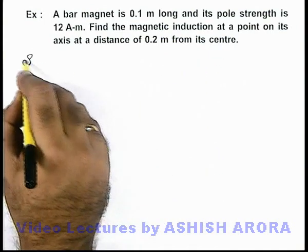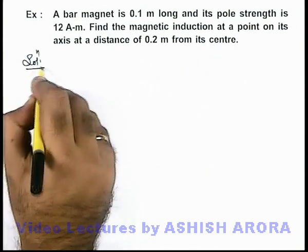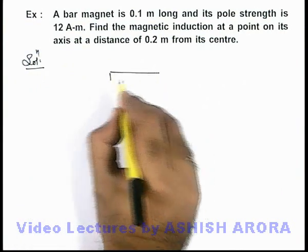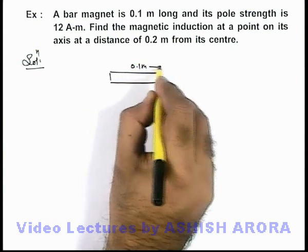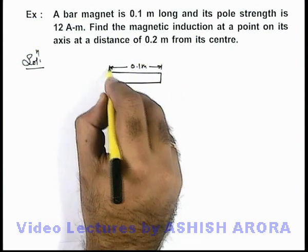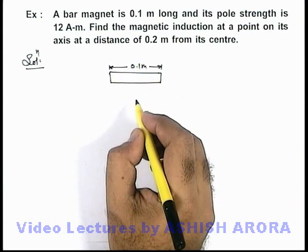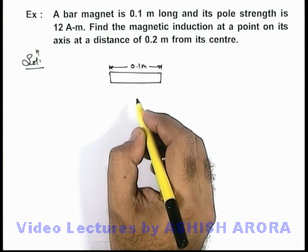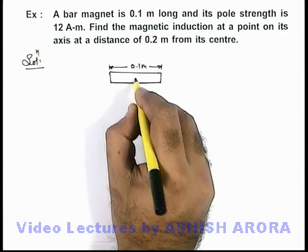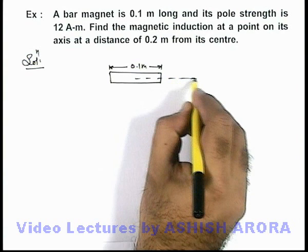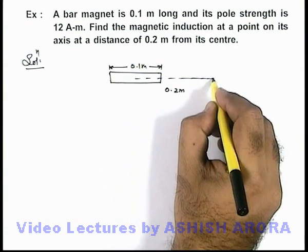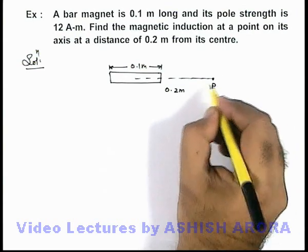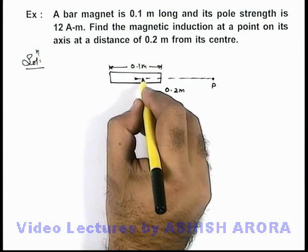Now if we draw the picture, we can see if this is a bar magnet which is having a length 0.1 meter. Its center is located at a distance of 0.2 meter from the point where we are required to calculate the magnetic induction. We name this point as P.